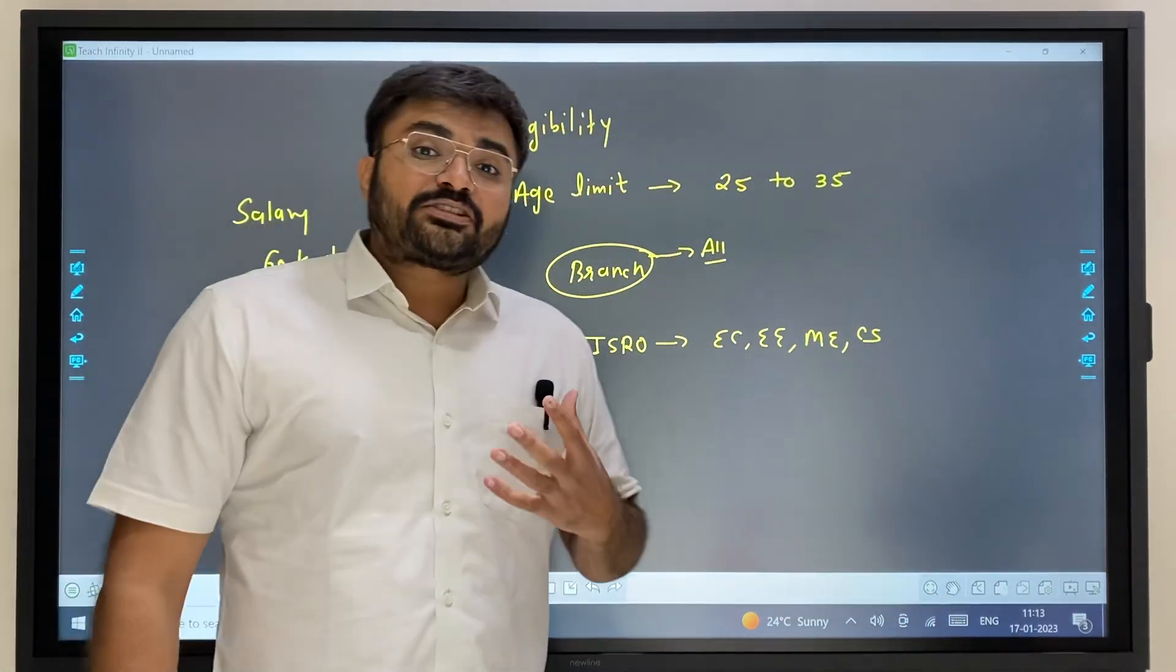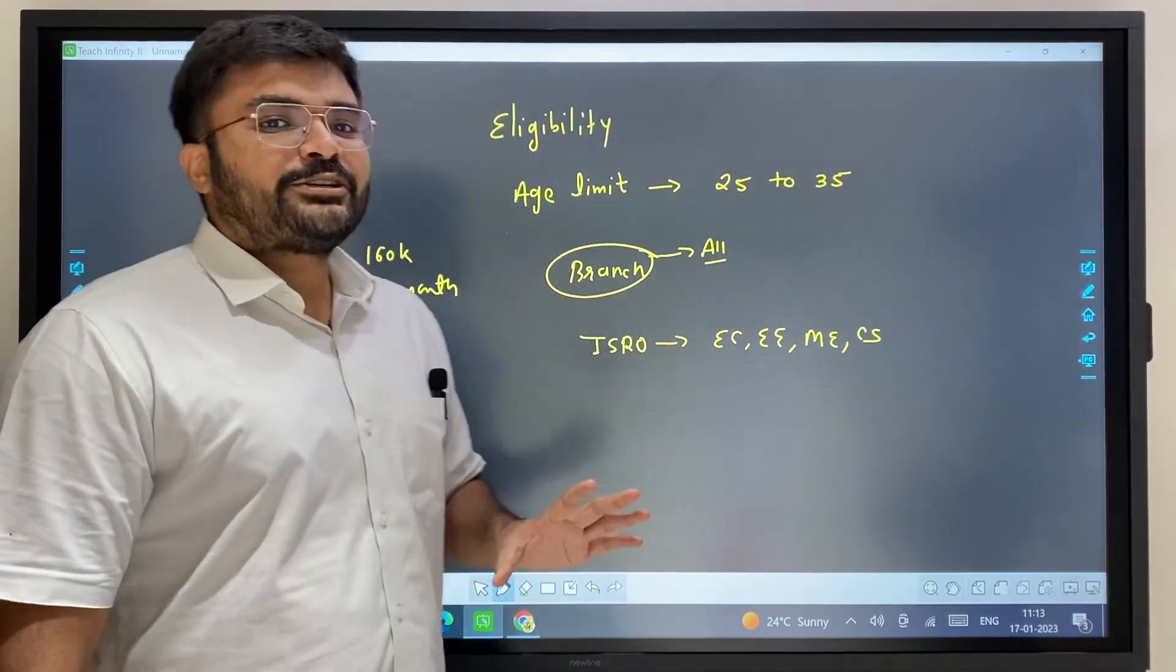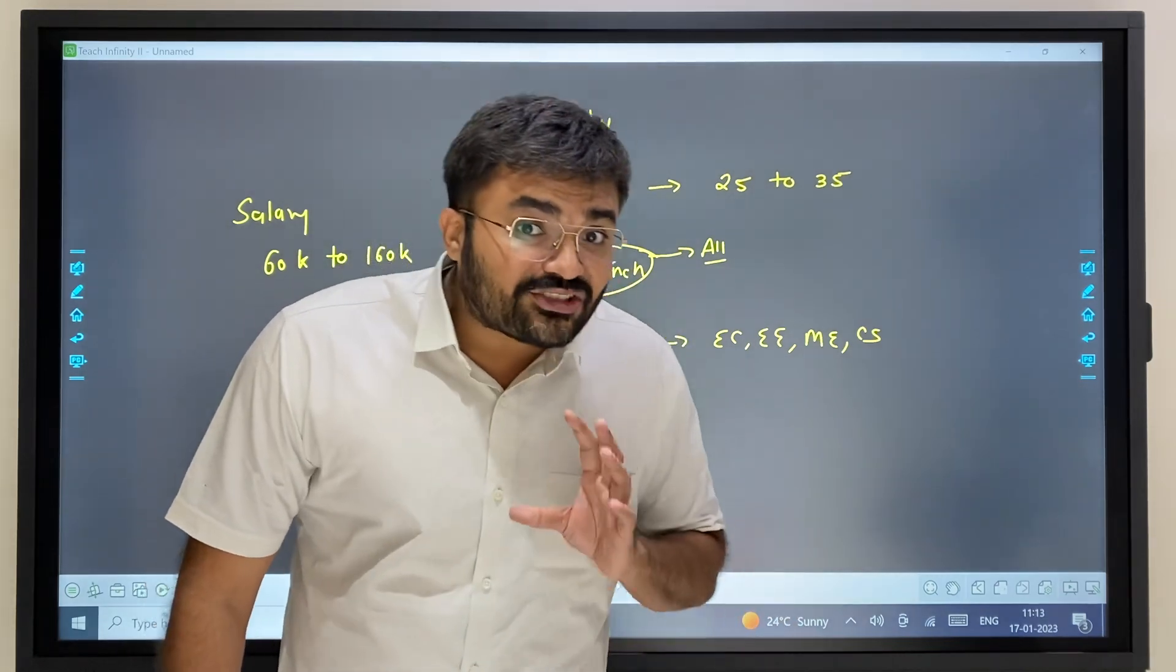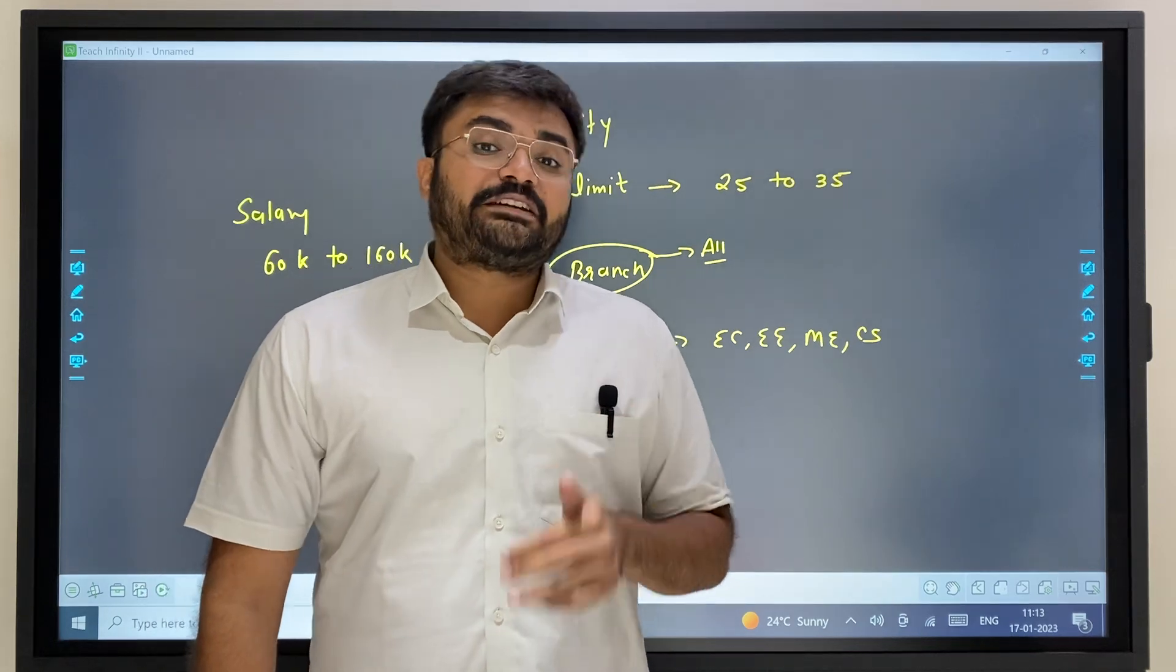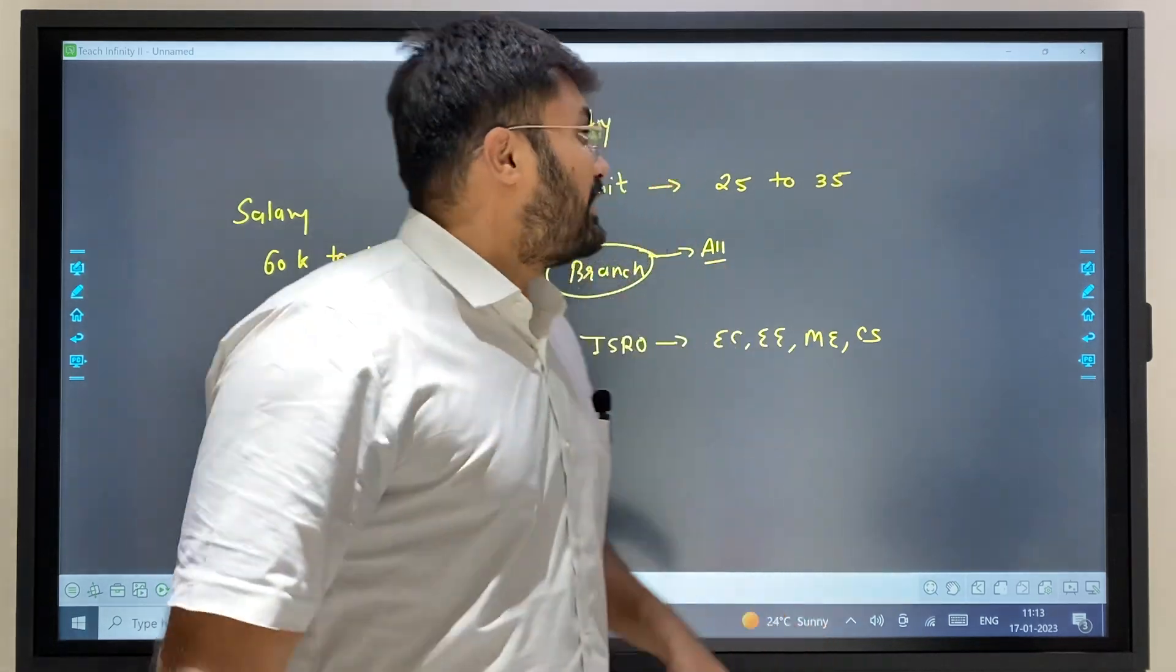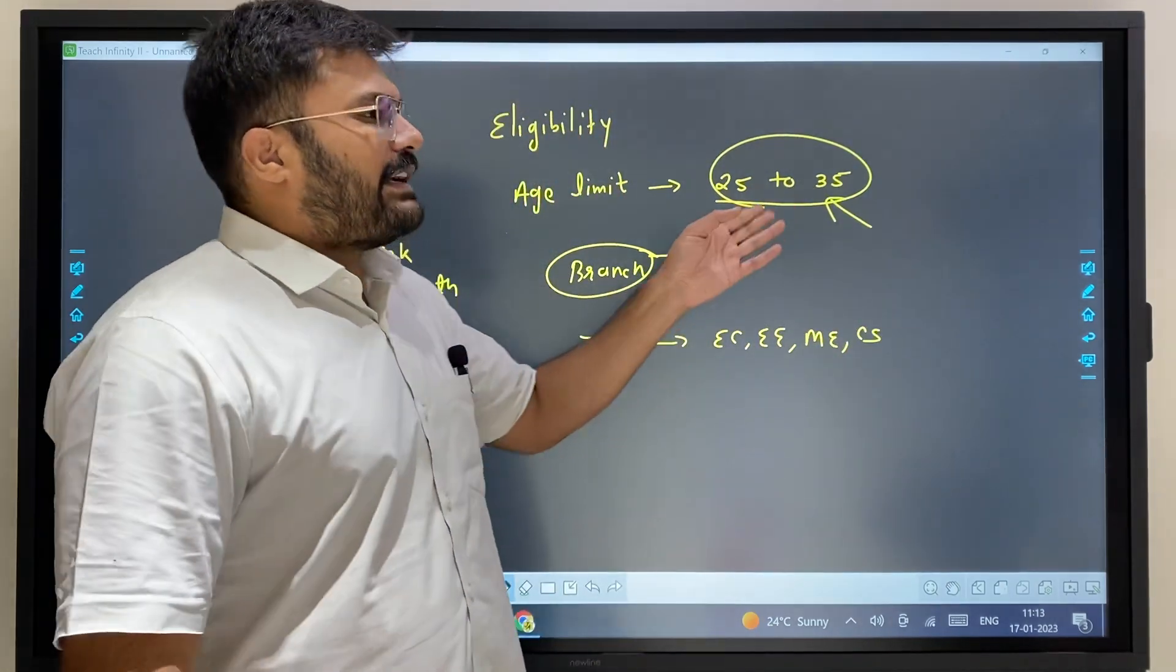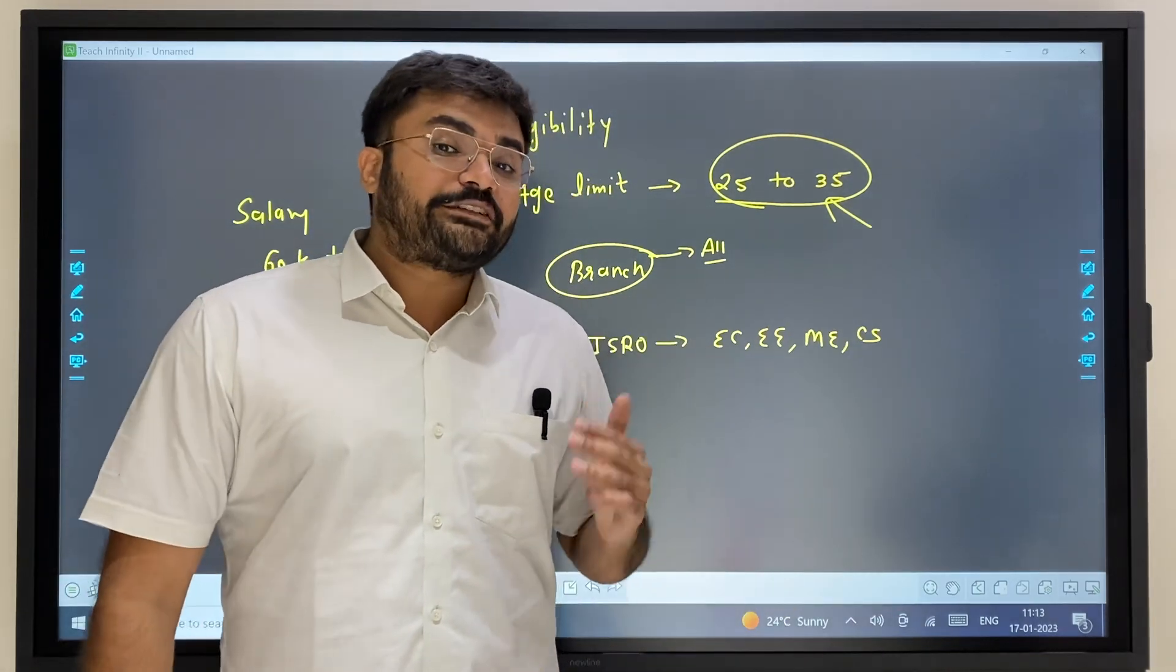There are eligibility criteria in PSU companies. There is an age limit that depends on the company and caste category—open category, SC, ST, OBC category, etc. Generally, the age range is 25 to 35 years. For reserved categories, it can extend to 37-38 years.